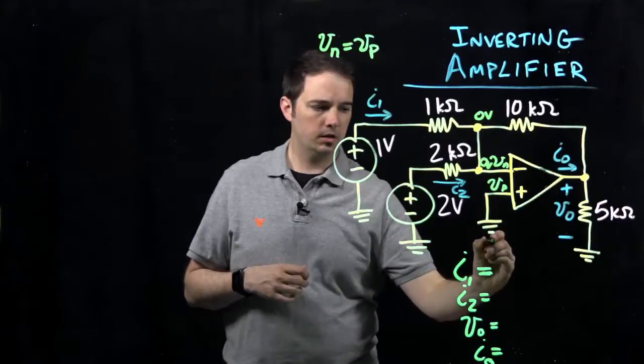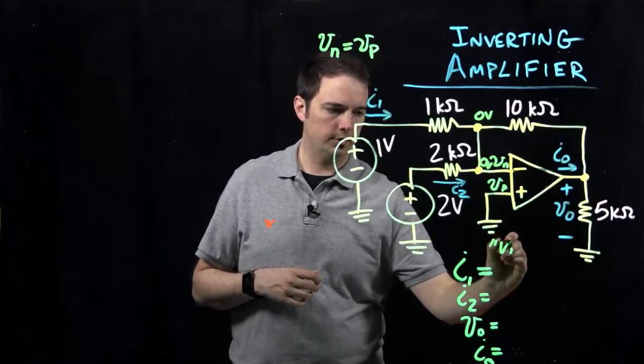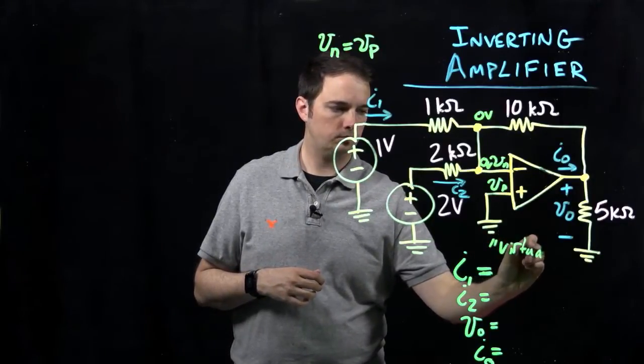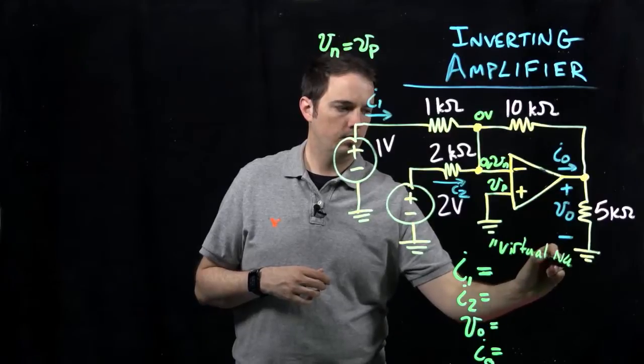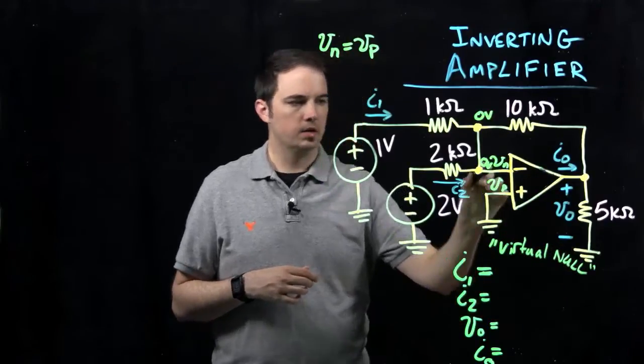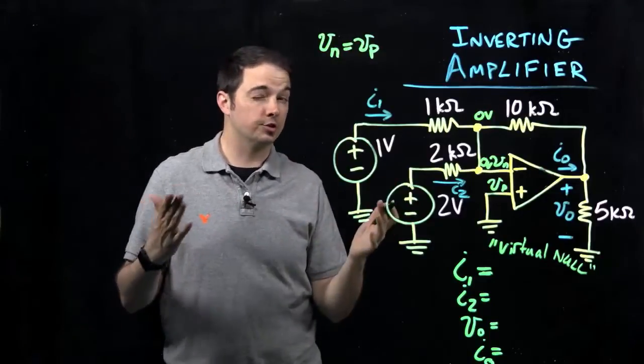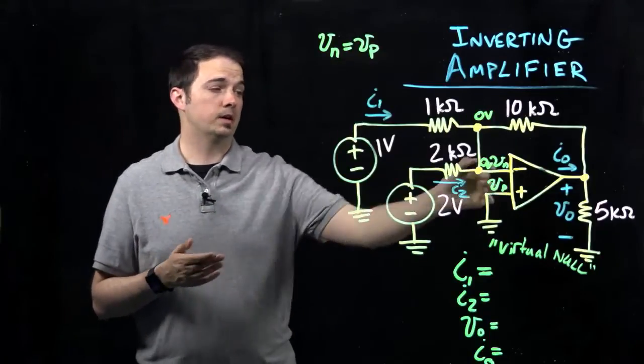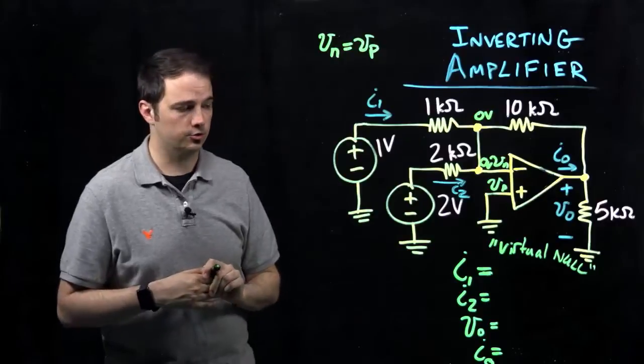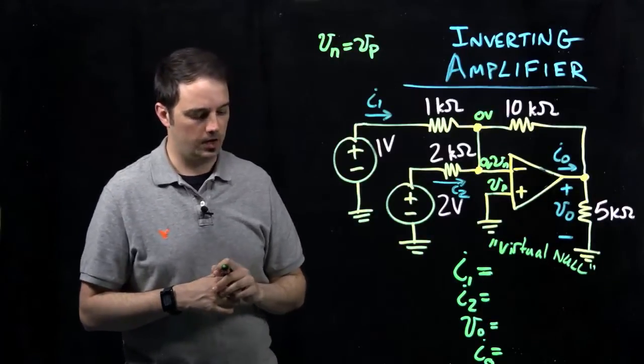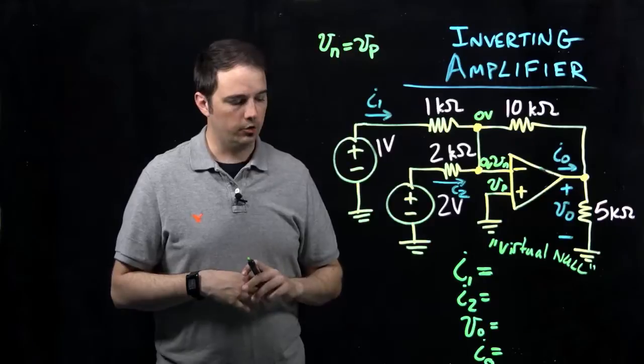This is otherwise called a virtual null, indicating that even though the negative input terminal is not directly tied to ground, it's virtually tied to ground because it's sitting at the same potential as the positive input of our op amp circuit.